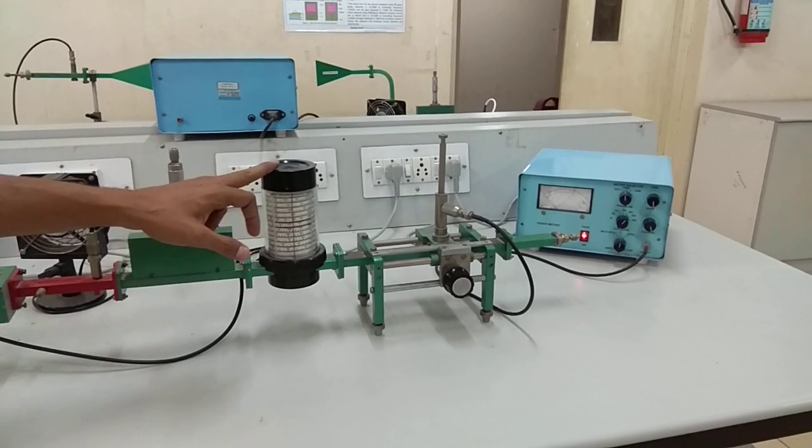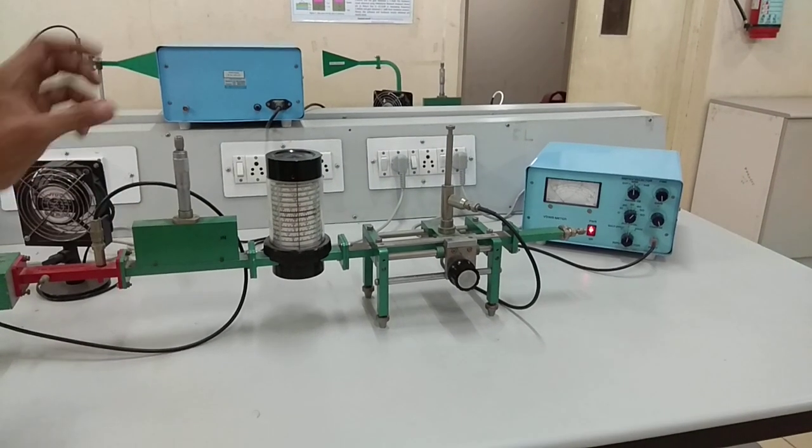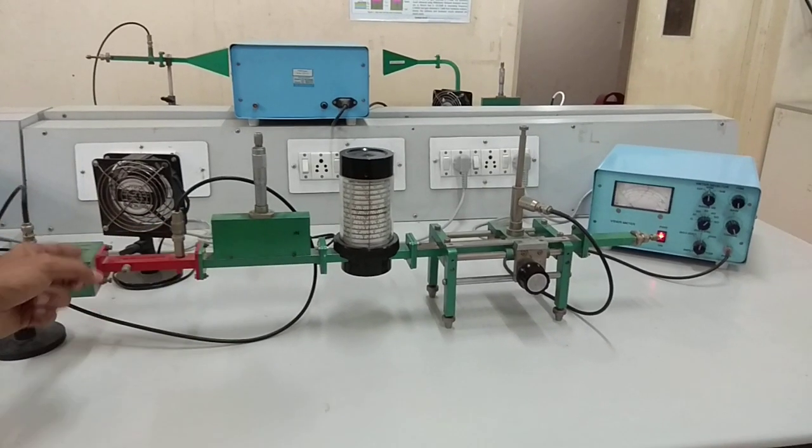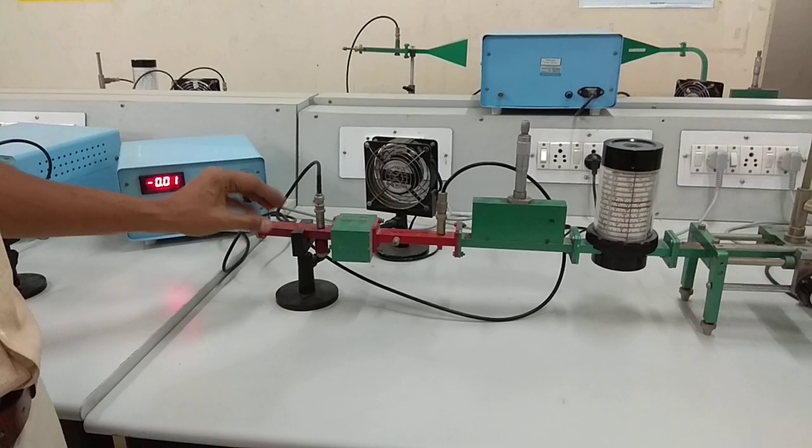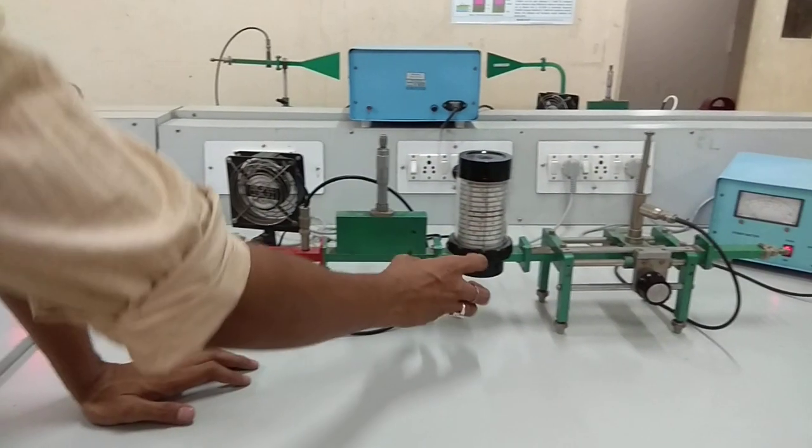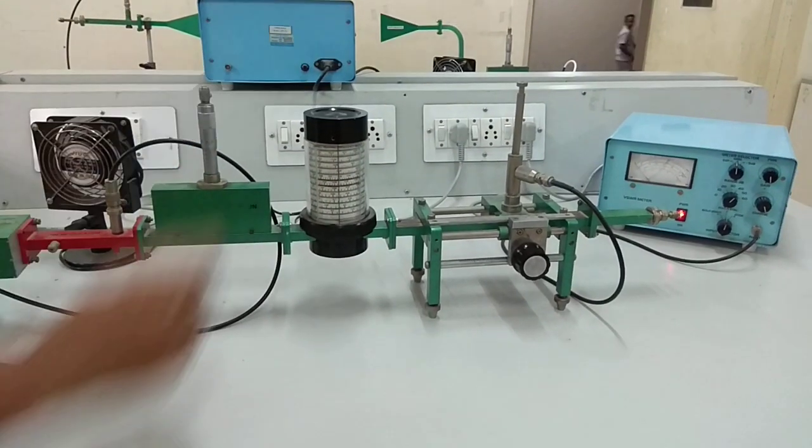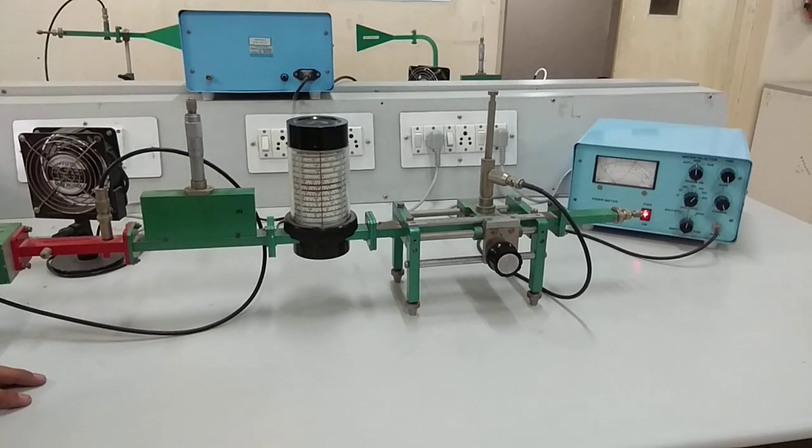The other component is the frequency meter. This component is used to measure the frequency of operation - at what frequency the power is traveling inside the waveguide. Once we have generated one frequency through the gun power supply, that frequency will be captured inside the cavity and we will get a dip at the VSWR meter. We can measure the frequency through this frequency meter.